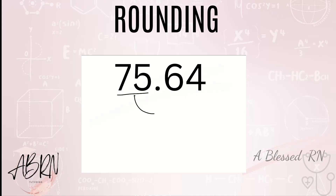Let's round 75.64 to the nearest whole number. We'll go one decimal place to the right — it's five or more, so raise the score to 76.